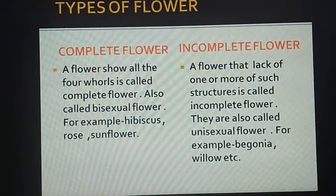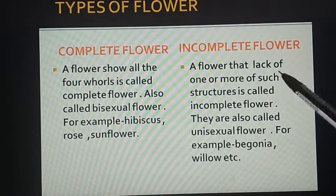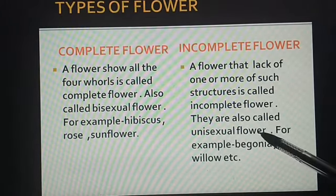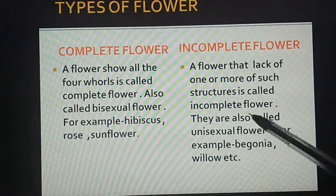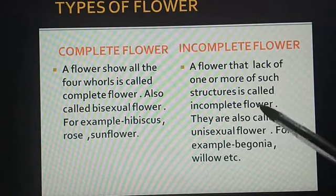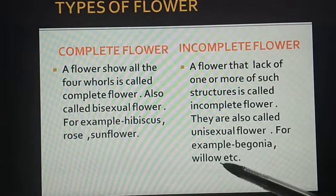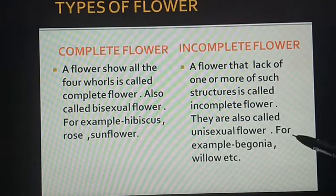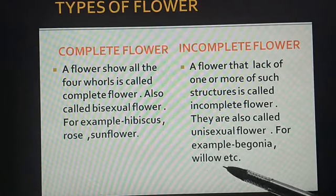Incomplete flower — in this, any one part is missing. They are also called unisexual flowers. Unisexual means only one part is present, either male part or female part, meaning either androecium is present or gynoecium is present. Examples are begonia and willow.